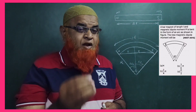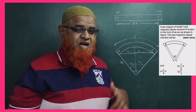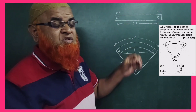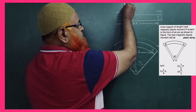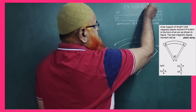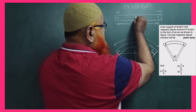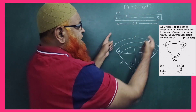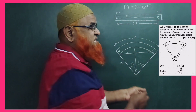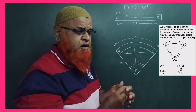Today let us discuss a new topic — magnetic moment — along with a shortcut and previous year problems. Magnetic moment is the product of pole strength and the distance between the two poles. For a bar magnet, the length from each pole is L, so the total distance between the two poles is 2L. The strength of a pole is its ability to attract or repel.